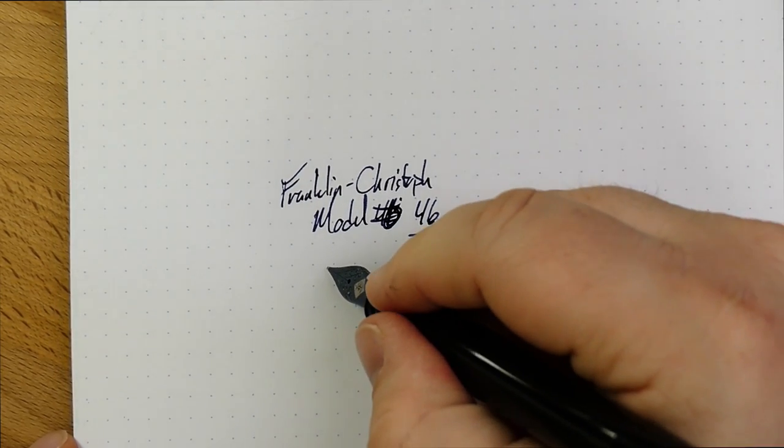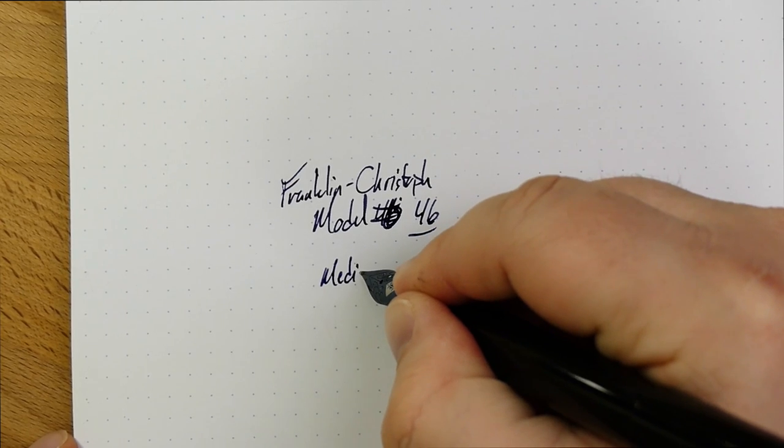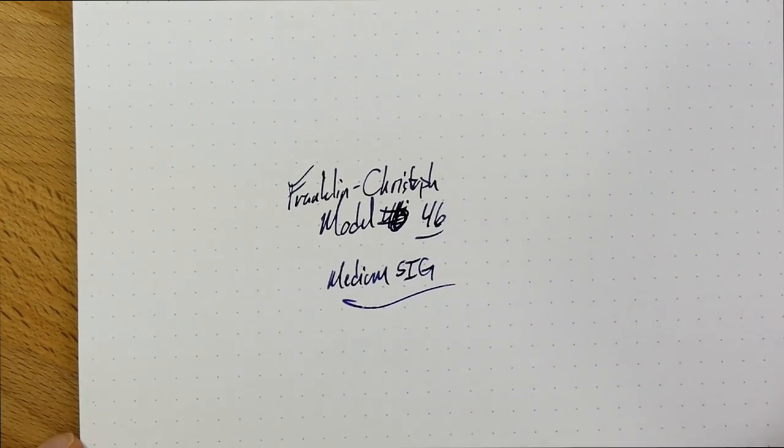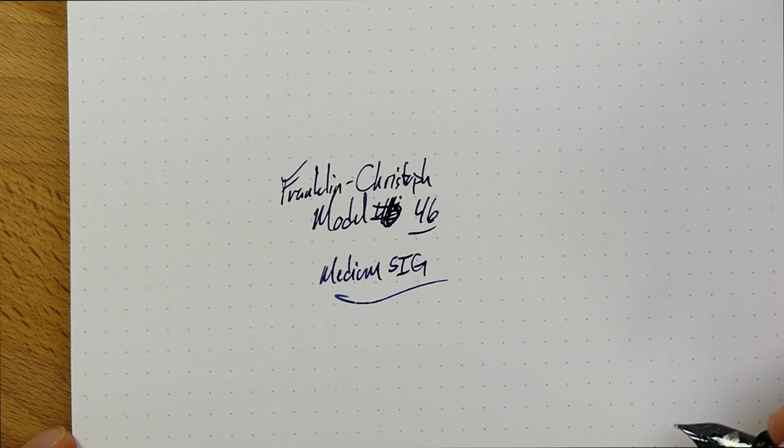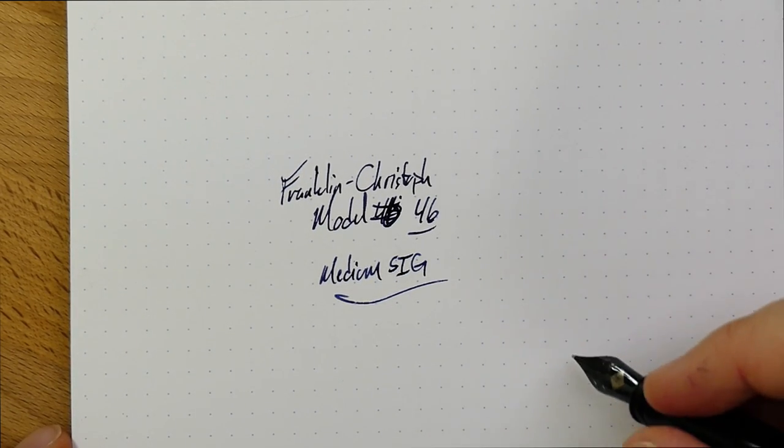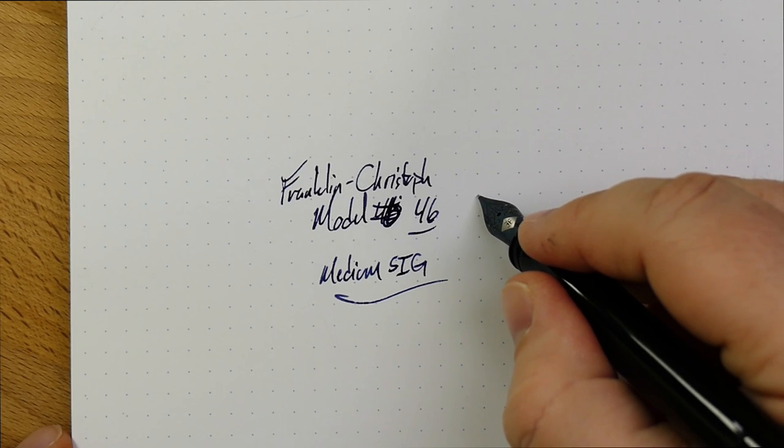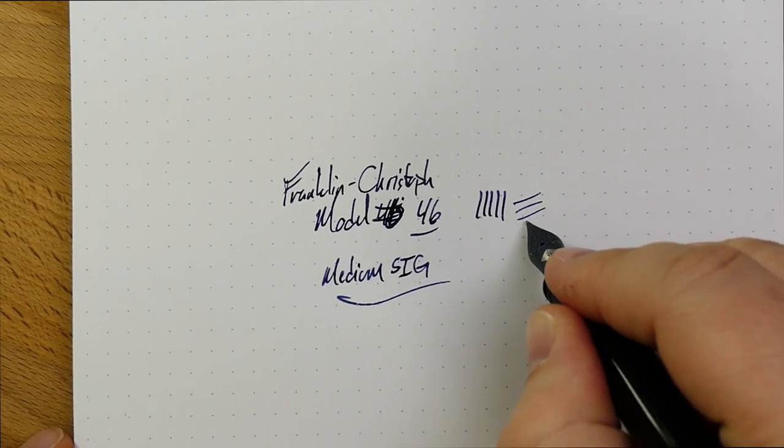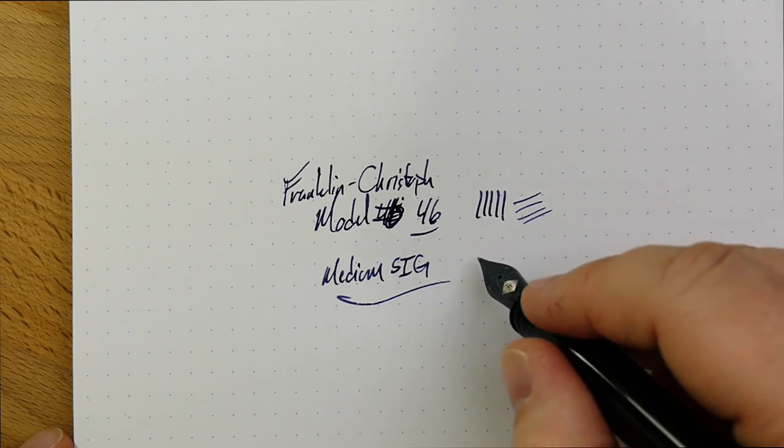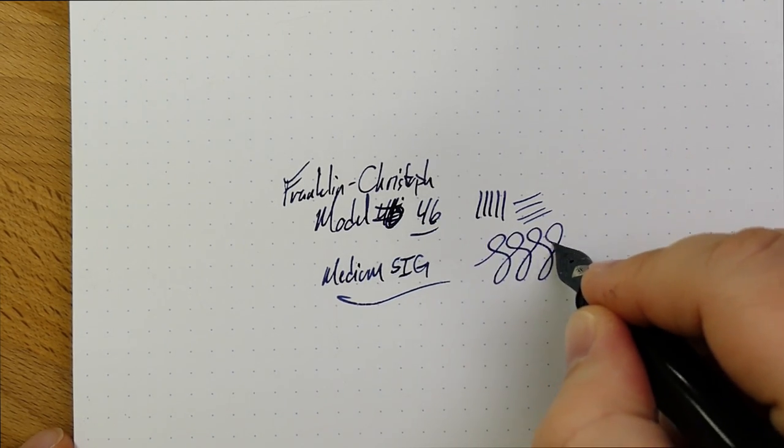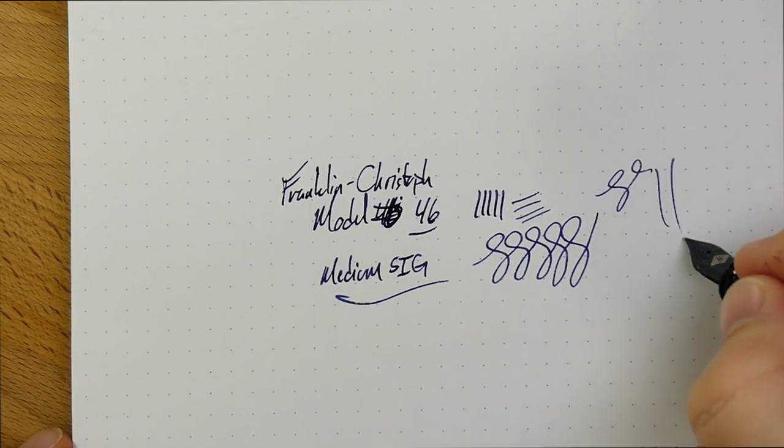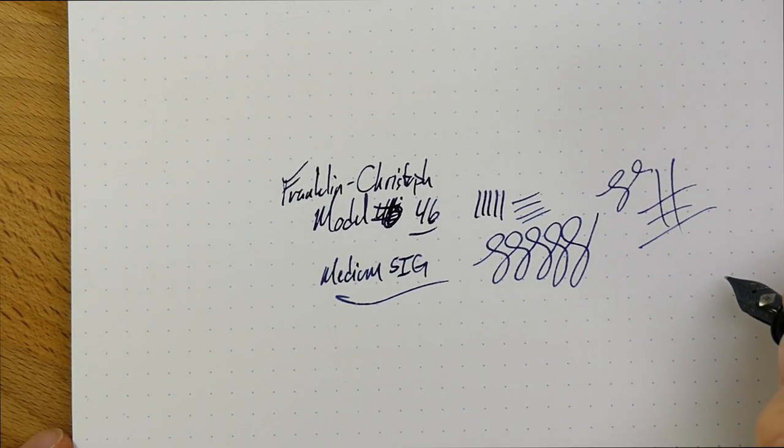And this is a medium SIG, which is one of my two favorite nibs. I really love the medium SIG and I love the broad SIG. Those will give you a nice thick-ish vertical and a really thin horizontal while also remaining smooth throughout. Just a fantastic nib. I love these things. My wife, Audrey, is making these.